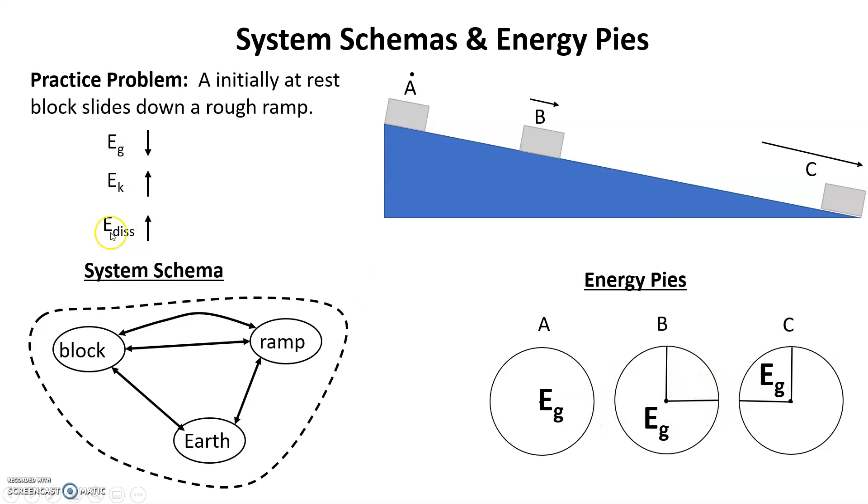That takes care of all the EG. Now I'm going to go to the next energy storage, EK. Notice the EK is increasing. While there isn't any EK in A, at B it's moving, so it's going to have some EK at B. I can't give all of that wedge to EK because don't forget I have another energy storage. Then at C it's going even faster, so in C I need a lot more EK.